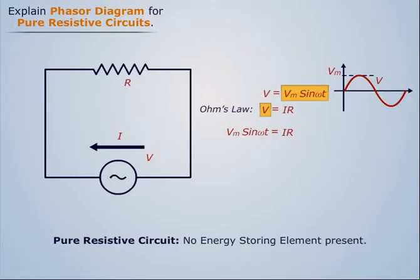Thus the current flowing in the circuit is I equals Im sin omega t, where Im is equal to Vm upon R, which is represented in time domain.